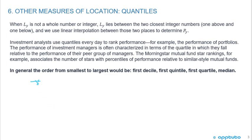In general, the order from smallest to largest would be first decile, first quintile, first quartile, to median. So we're starting from the first, that's smallest, up to the largest.